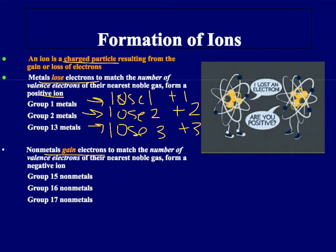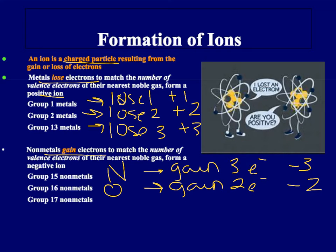Your non-metals gain electrons. If you remember, electronegativity of non-metals is very high, meaning that it has a high likelihood of attracting electrons. Your group 15 with nitrogen in there is going to gain 3 electrons to have a negative 3 charge. Oxygen is going to gain 2 and therefore have a negative 2 charge. Fluorine is going to gain 1 electron and have a negative 1 charge.